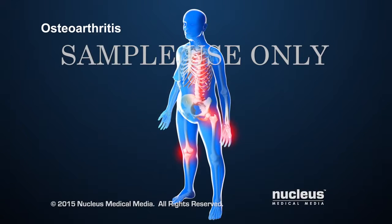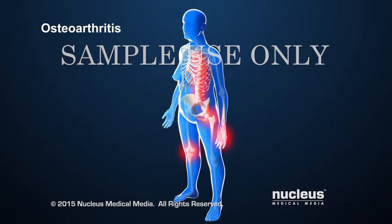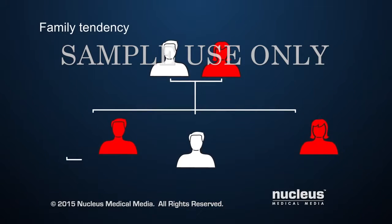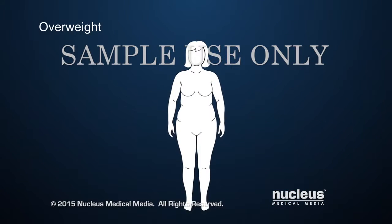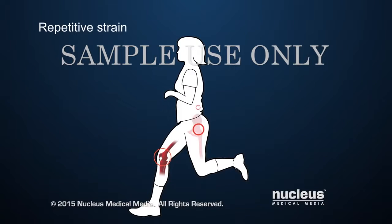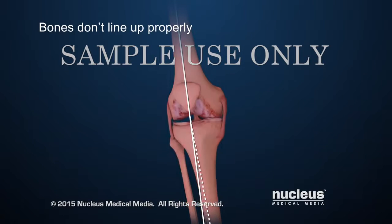Often the cause of osteoarthritis is unknown, but it may be due to a combination of risk factors: a family tendency for this condition, being overweight, a joint injury such as a fracture, repetitive strain from activities such as sports, and problems with the bones in a joint not lining up properly.